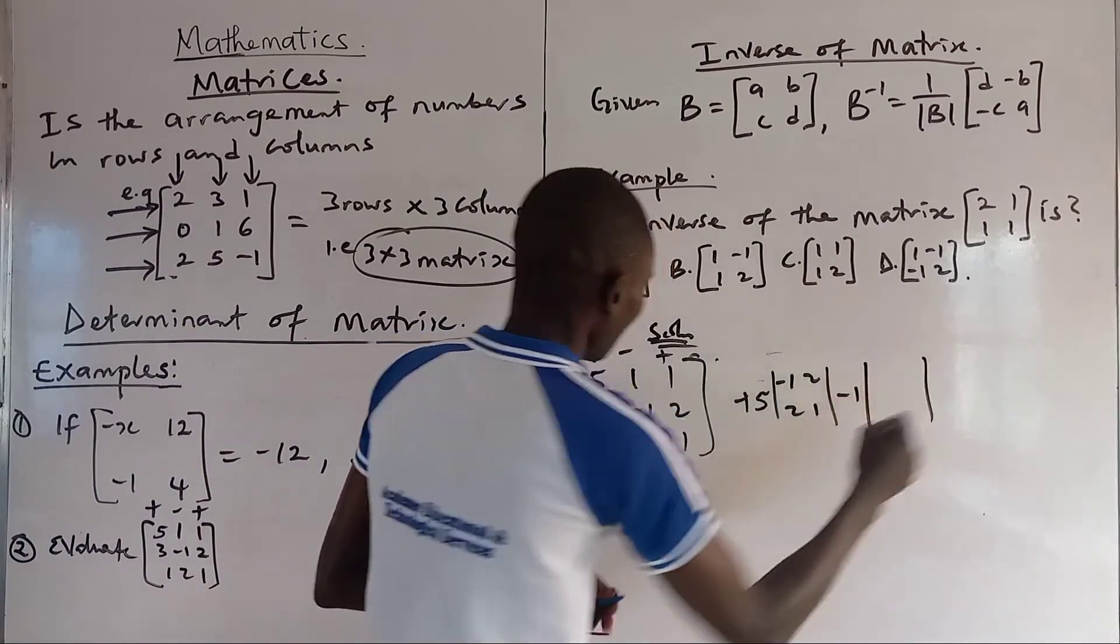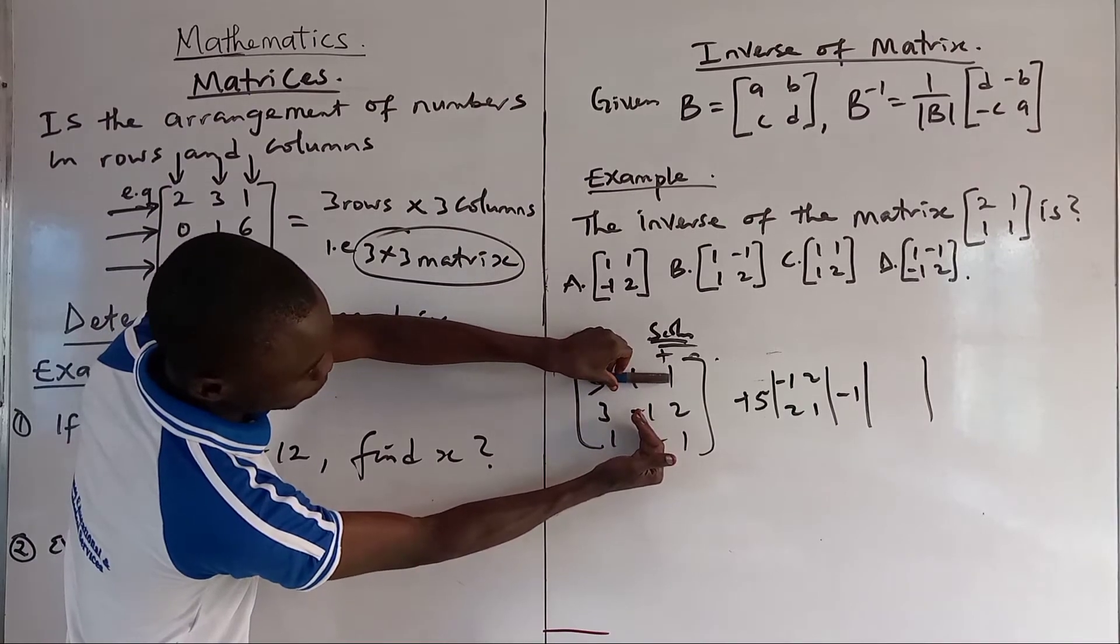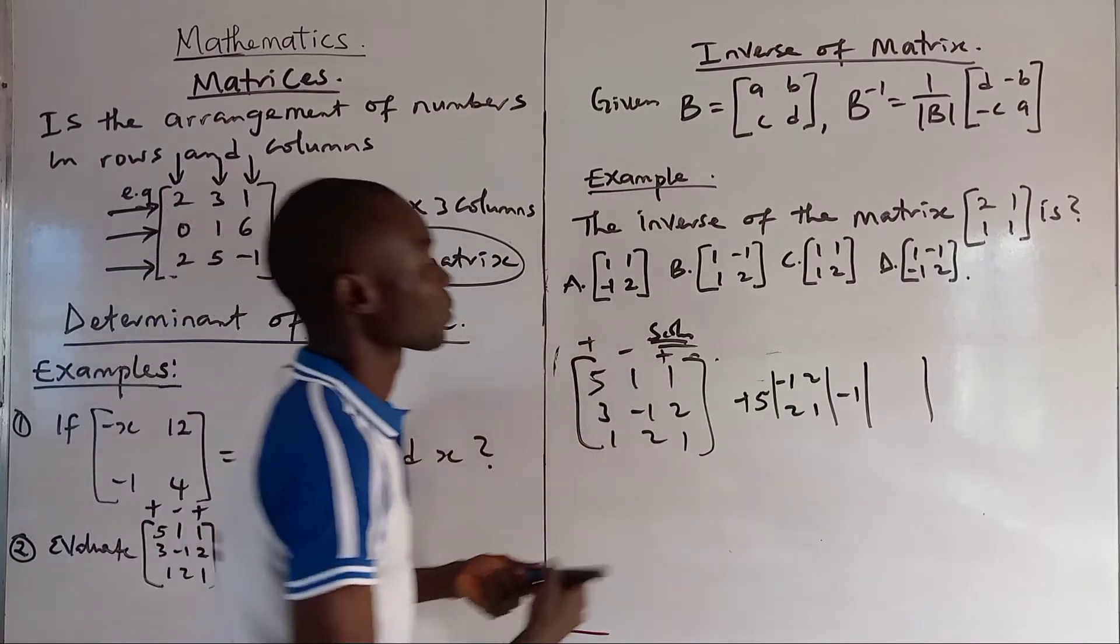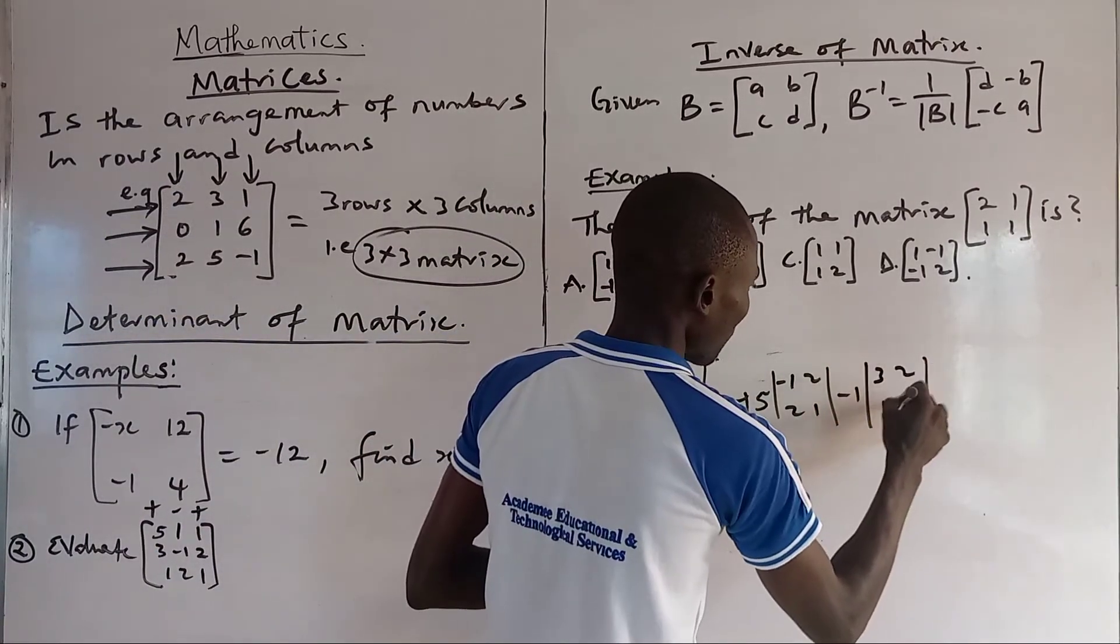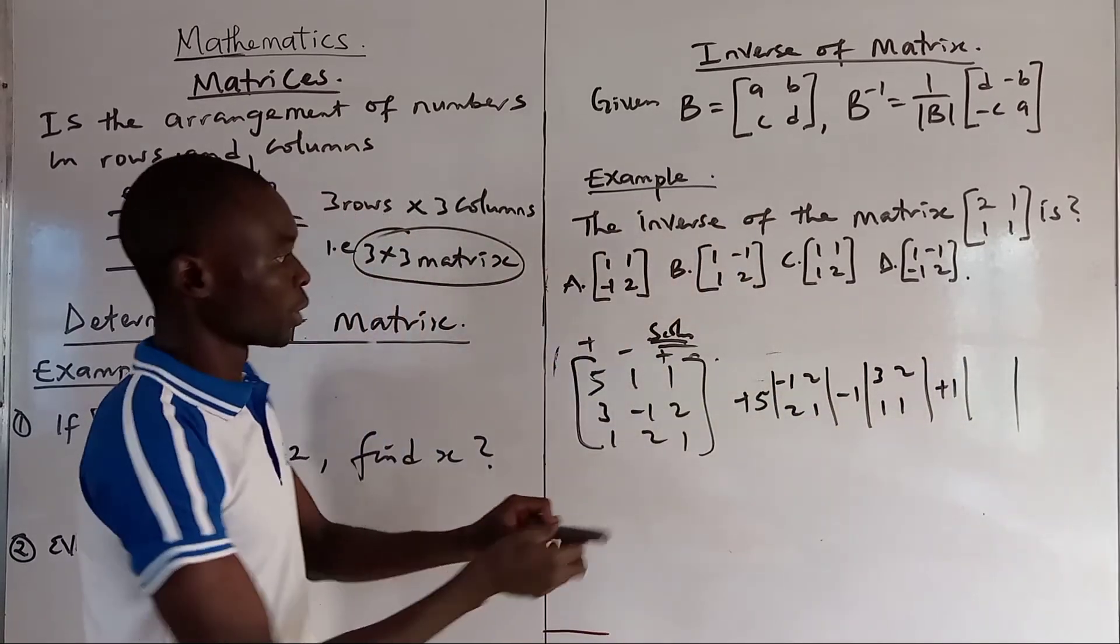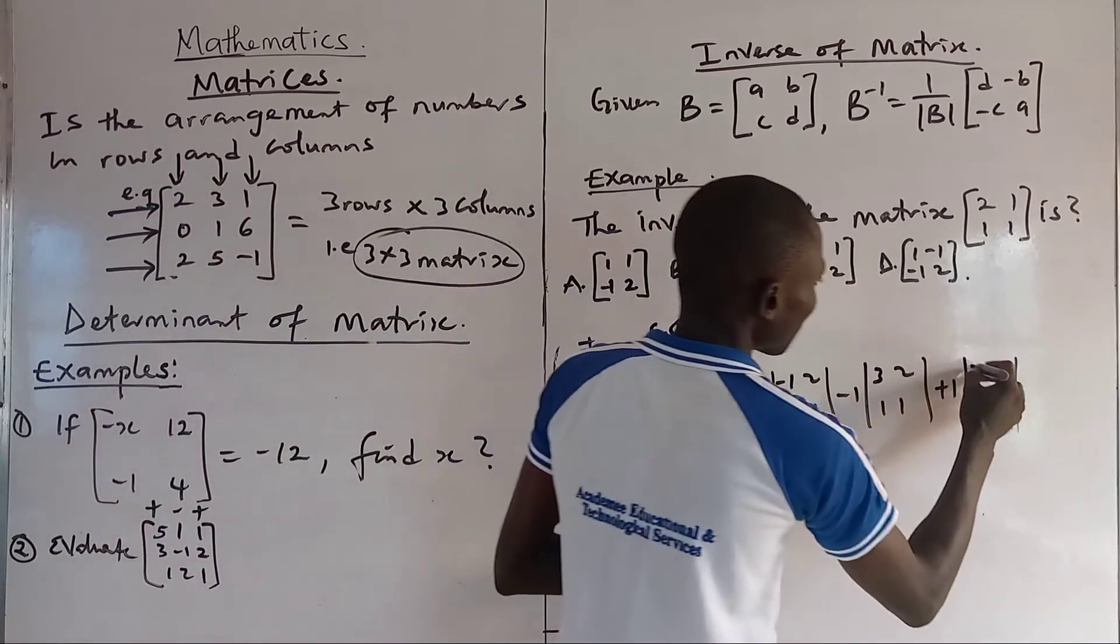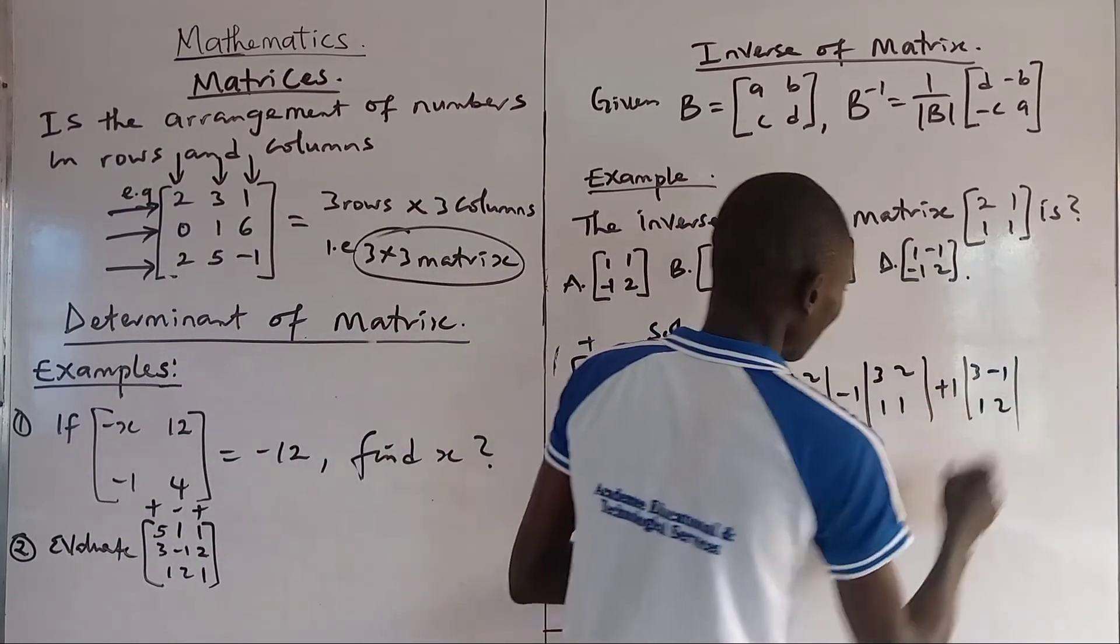You cover it this way and this way. Then by then we go 3, 2, 1, 1. 3, 2, 1, 1. Plus 1. Then we are left with 3 minus 1, 1, 2. 3 minus 1, 1, 2. Now we are breaking the 3 by 3 into minors, 3 different minors now.